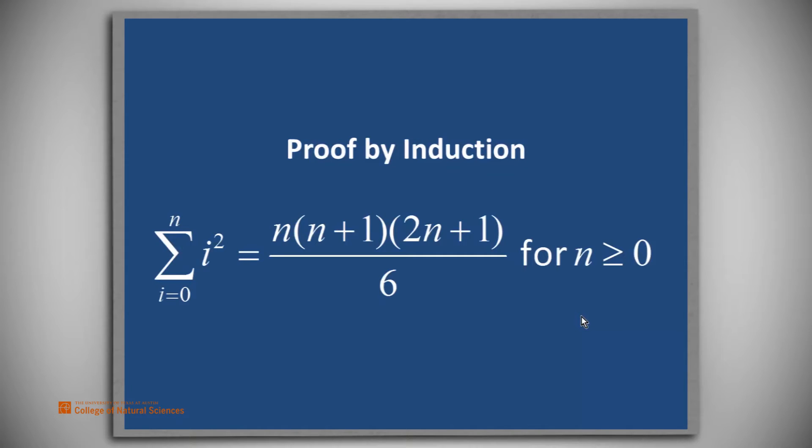This is a demonstration of proof by induction. We're going to prove the theorem that the summation from i equals 0 to n of i squared is